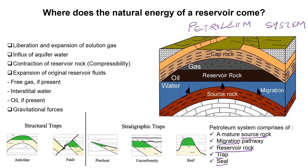Migration can be divided into three parts. Primary migration means oil moves from the source rock to the reservoir rock. Secondary migration means oil or hydrocarbon moves from the reservoir rock to a trap or seal. Tertiary migration means hydrocarbon moves from one reservoir to another, or from one trap to another, or seeps to the surface.